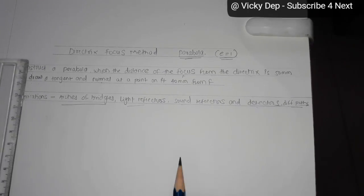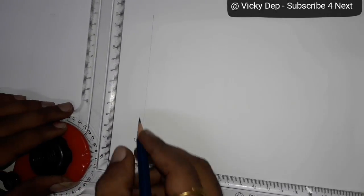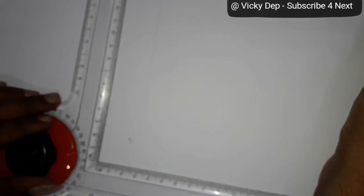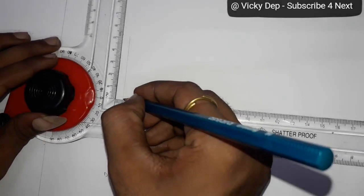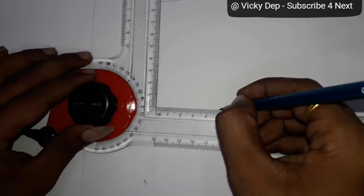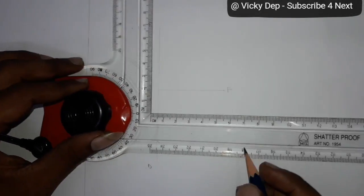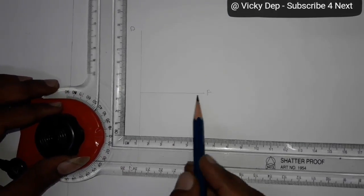So today we are going to draw a parabola. Now first you have to draw a directrix, that will be a straight vertical line here. We will give some name D for directrix. Now the focus from the directrix is 50 mm, so from the directrix you have to take 50 mm, focus point, give name F.